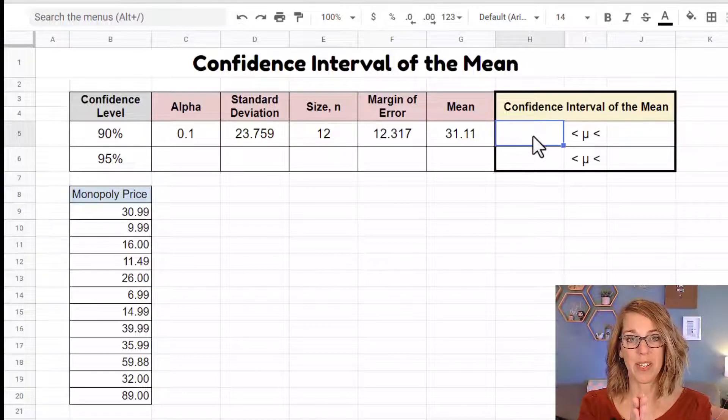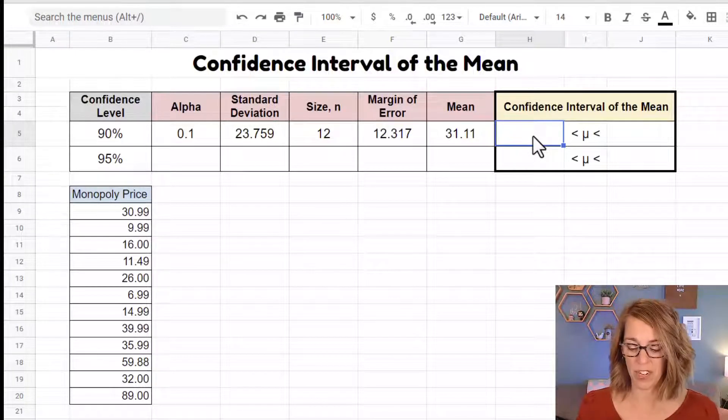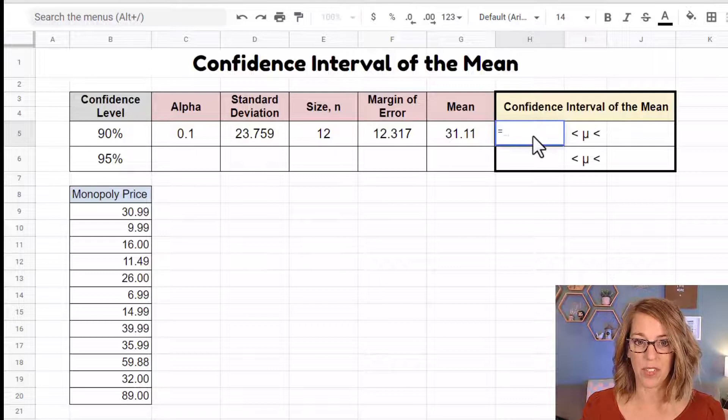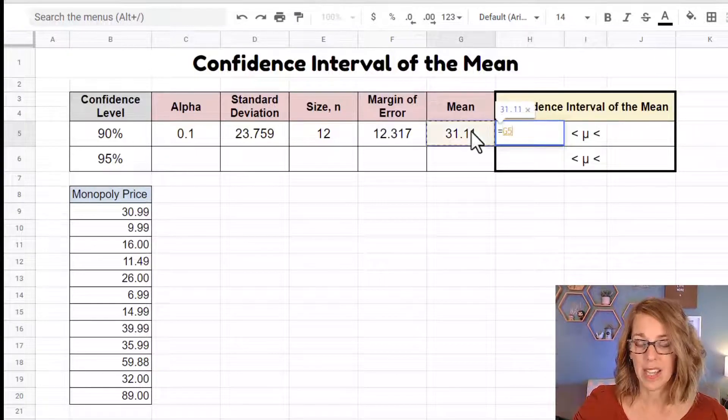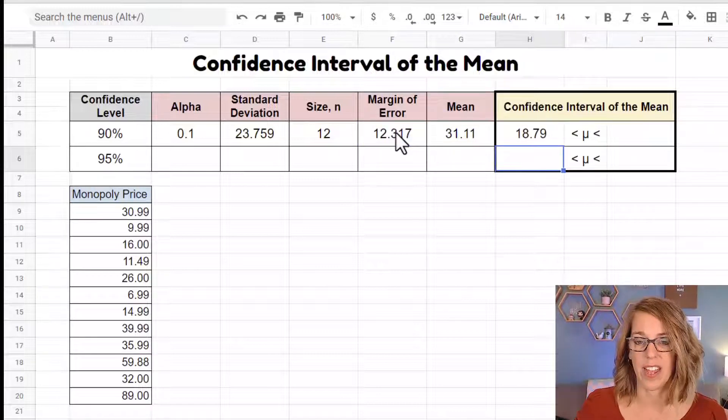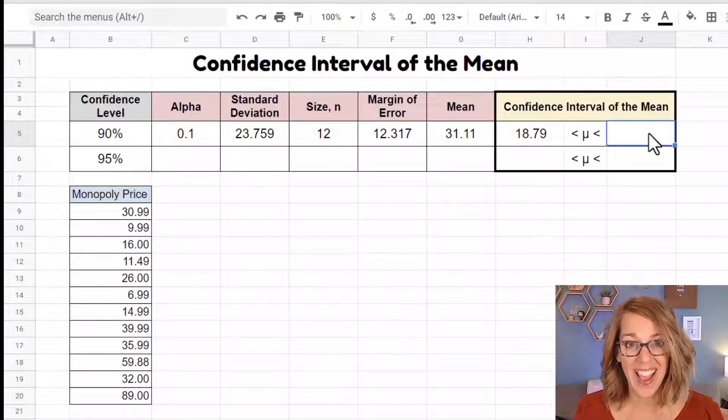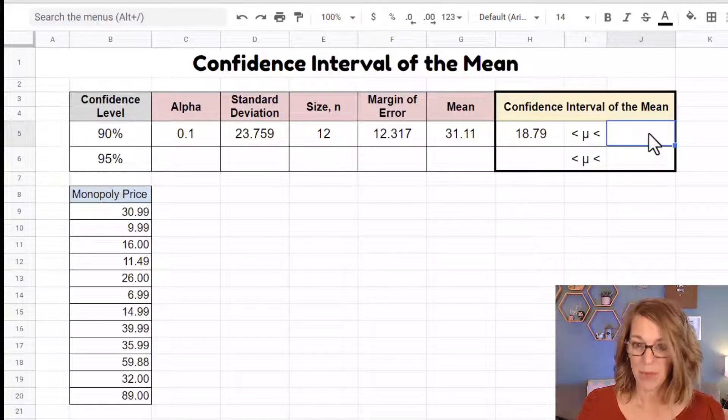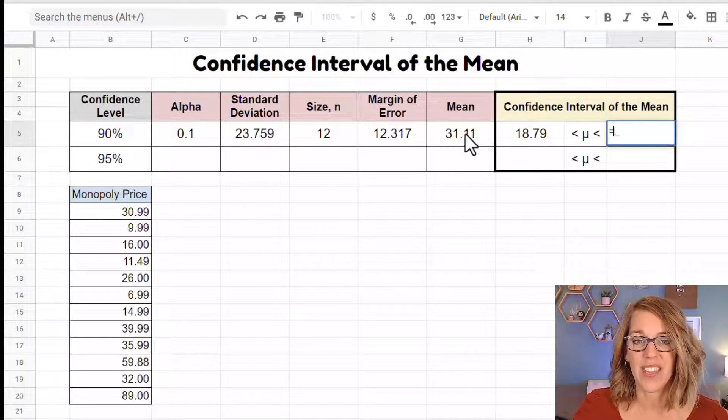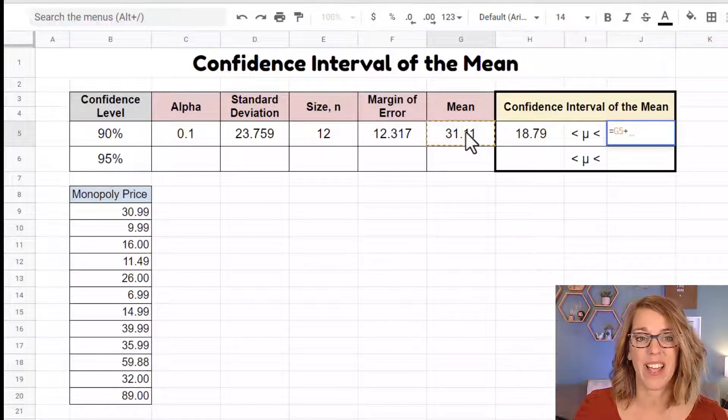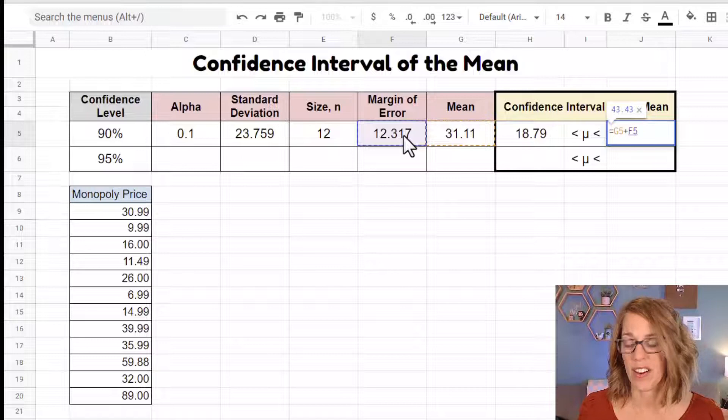I'm going to take that mean, which is in the middle interval and subtract the margin of error for the first value. So equals, I'm going to click on mean, and then hit the minus key, click on my margin of error, and then enter. And I can do the very same thing for my upper level of the interval. But this time I'm going to add the margin of error. So I'm going to click equals and then mean, this time plus the margin of error, and then enter.